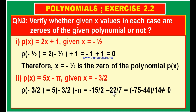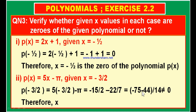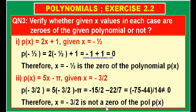If one is positive and the second value is negative, then only you will get 0. Therefore, this is not equal to 0. Since the value of the polynomial is not equal to 0 when you substitute x is equal to minus 3 by 2, therefore you can say that x is equal to minus 3 by 2 is not a zero of the polynomial.